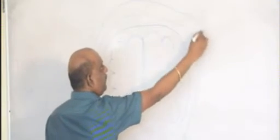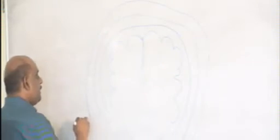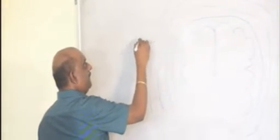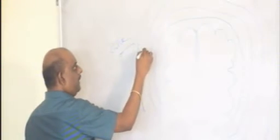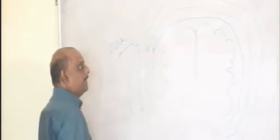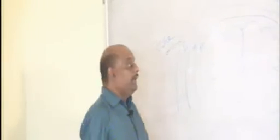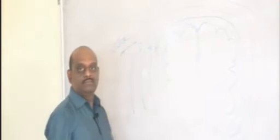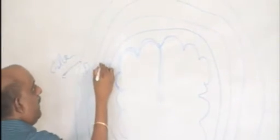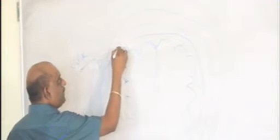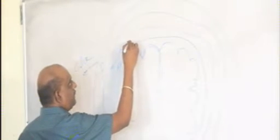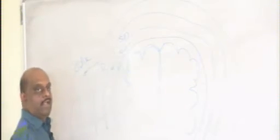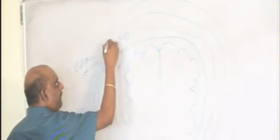Above that what you have is called the dura. Above that you are having calvarium, the skull bone. Between arachnoid and the pia you are having a space which is called subarachnoid space. Between the dura and the arachnoid you have subdural space. And between calvarium and dura you are having epidural space.